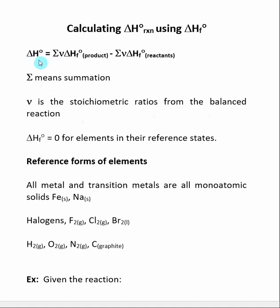So this equation says that the delta H naught of a reaction is equal to the summation of the delta H of formations of the products times their stoichiometric coefficients minus the summation of the delta H of formation of the reactants times their stoichiometric coefficients.